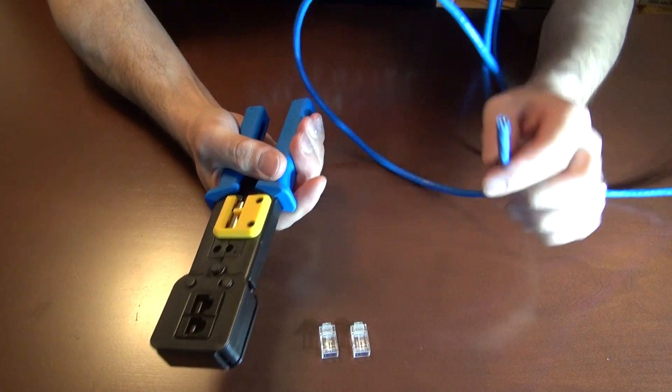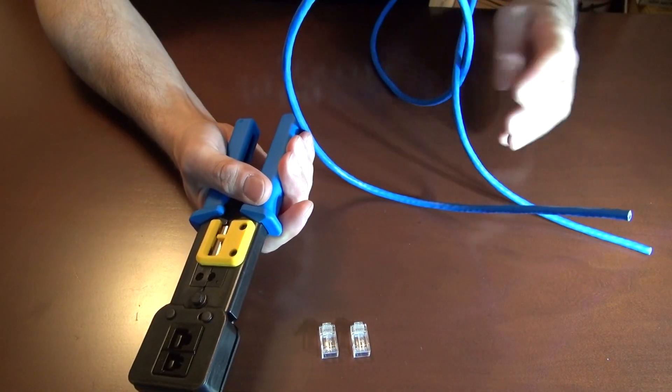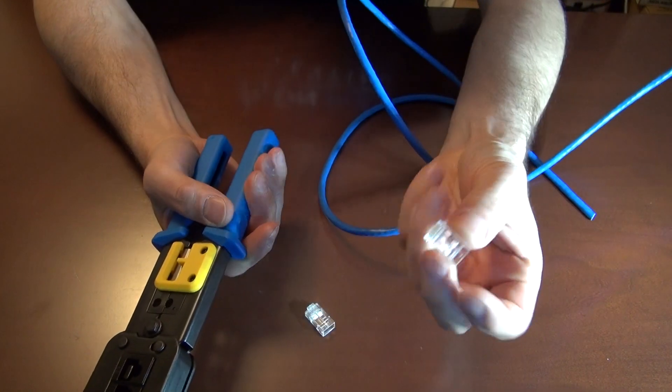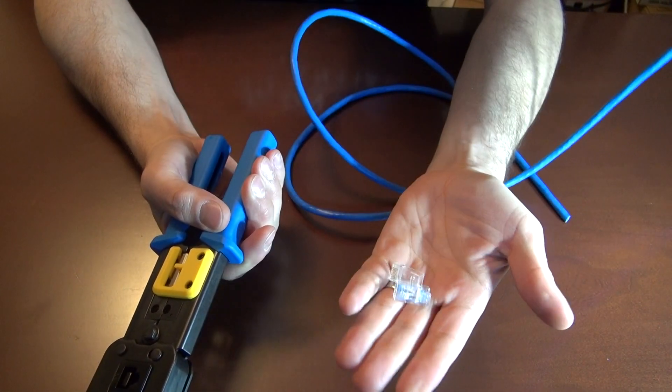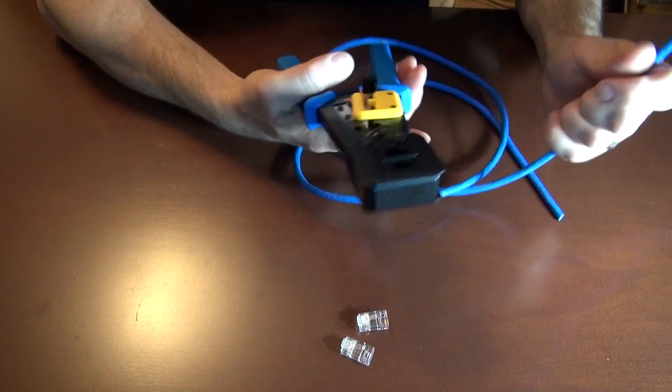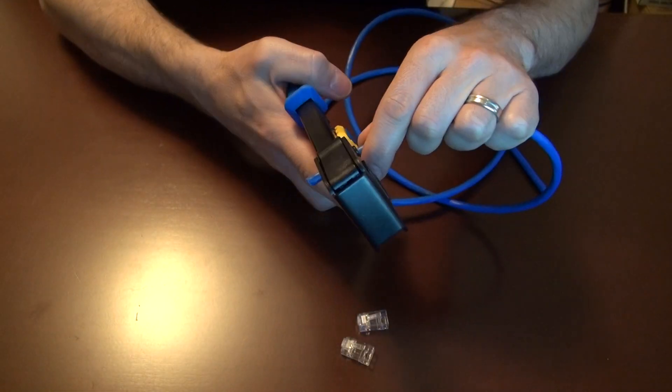You're going to need, grab your, I have Cat 6 here, but you can use Cat 5. Got my RJ45 connectors and my crimping tool. That's pretty much all you need.